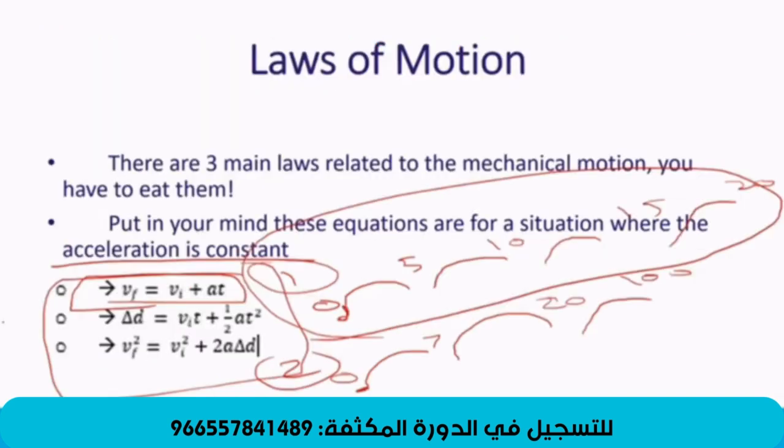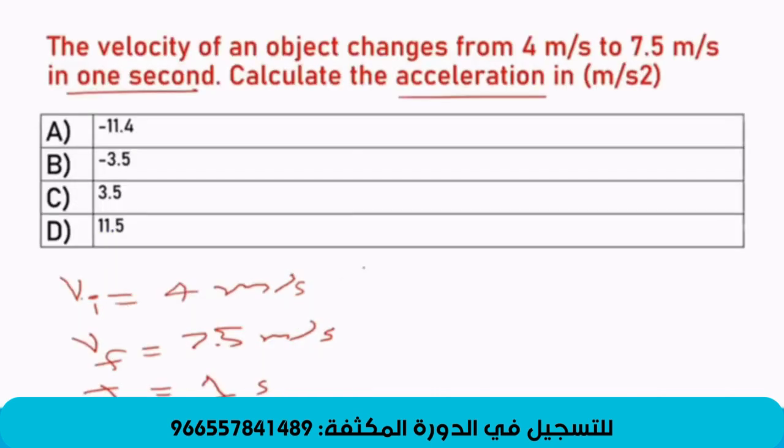If we see what we are given, and what we are not given, or what we are asked, we look at the laws here. We are given VF, we are given VI, we are given the T, only we have A. So, we can utilize this law. We don't need to utilize these two laws here. So, if we state them, VF equals VI plus A T.